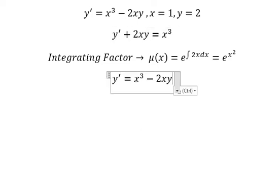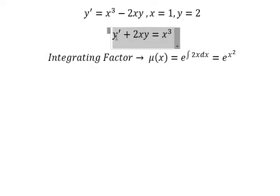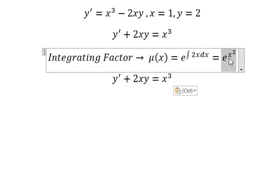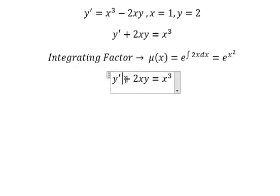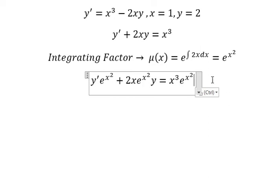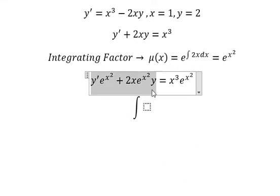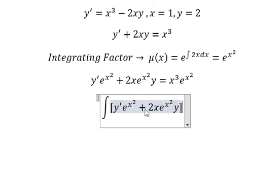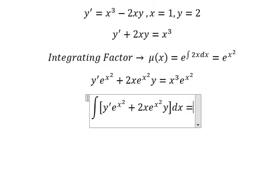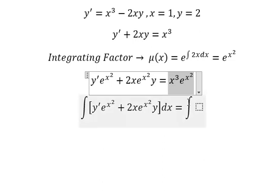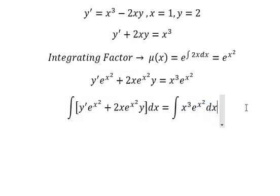So we multiply both sides by e to the power of x squared. Next we apply the integration to both sides.